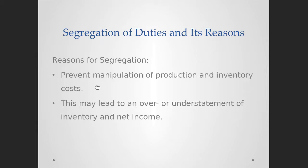The second reason is that this may lead to an overstatement or understatement of inventory and net income. If any one inventory cost — direct, indirect, fixed, or variable — is miscalculated by one individual who is the only person responsible, you could have an overstatement or understatement of inventory, leading to a wrong cost of goods sold and ultimately a wrong net income. With multiple people involved, as prescribed by segregation of duties, the mistake would be caught by someone else.